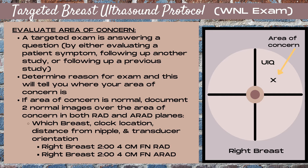For this example, we're using the right breast upper inner quadrant as our area of concern. If you've evaluated the area of concern and it's normal, you want to document two normal images — also known as negative images — directly over the area of concern, in both radial and antiradial planes. Annotate with which breast you're in, the clock location, the distance from the nipple, and the transducer orientation.